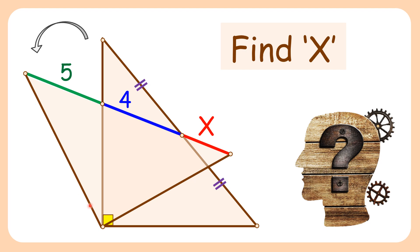In this interesting question, two right angle triangles are formed which are congruent to each other. This point here is bisecting the hypotenuse of one of the triangles, and the hypotenuse of the second triangle is divided into lengths of 5, 4, and x centimeters. Using this limited data, we have to find the value of x.